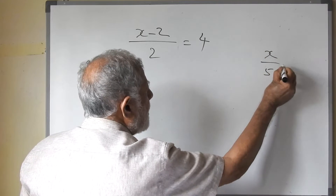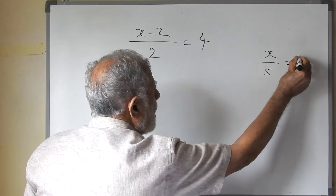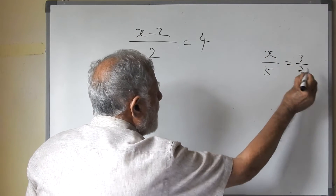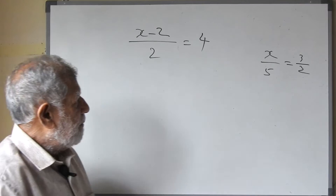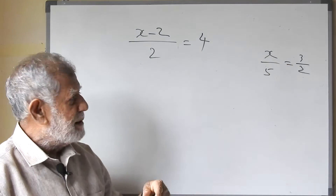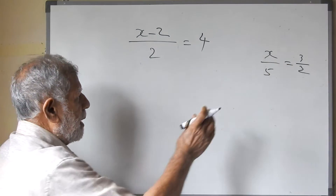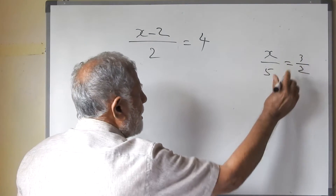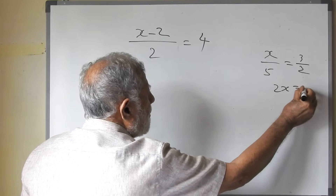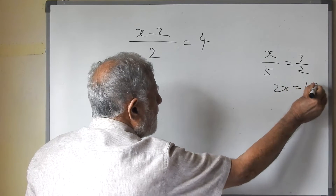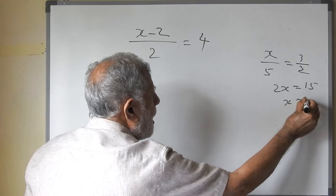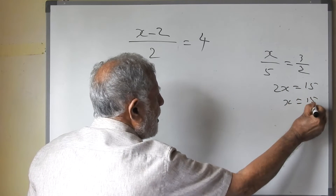Now we know how to solve fractions. If x upon 5 equals 3 upon 2, we cross-multiply. We cross-multiply and we get the answer. So 5 into 3 is 15, x into 2 is 2x. So x is equal to 15 upon 2.